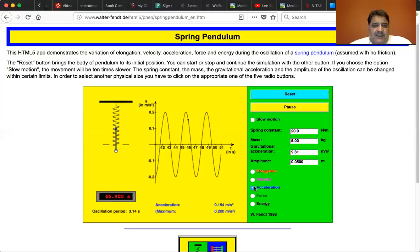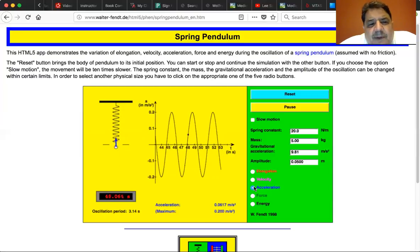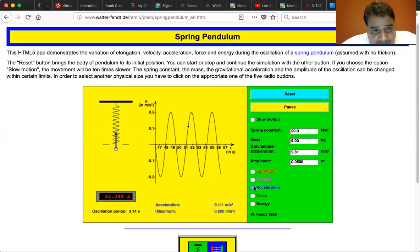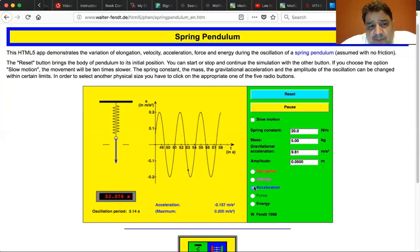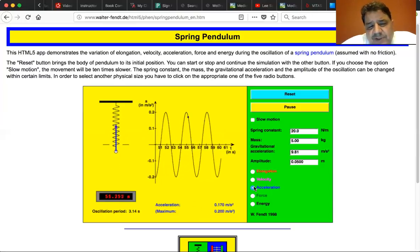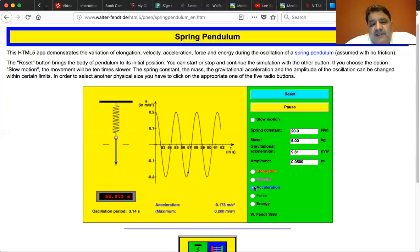You can see the acceleration. The acceleration is minimum as it's going through the zero crossing, and it's maximum when it gets to either end, because that's when it's changing the most. In fact, it changes direction.